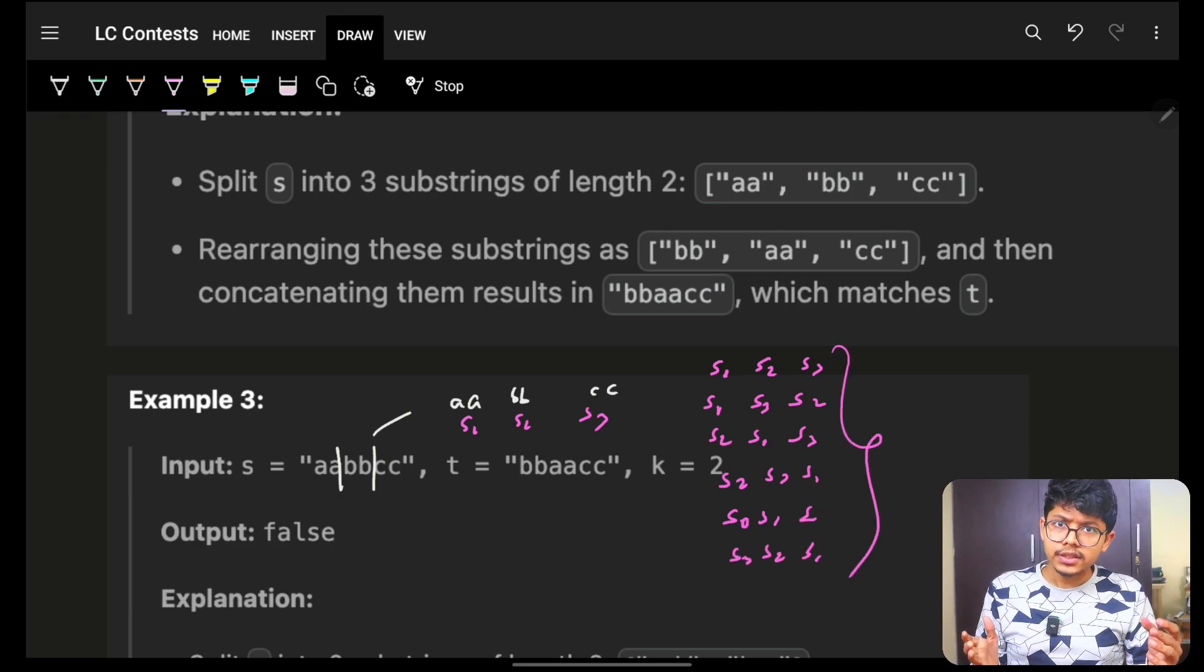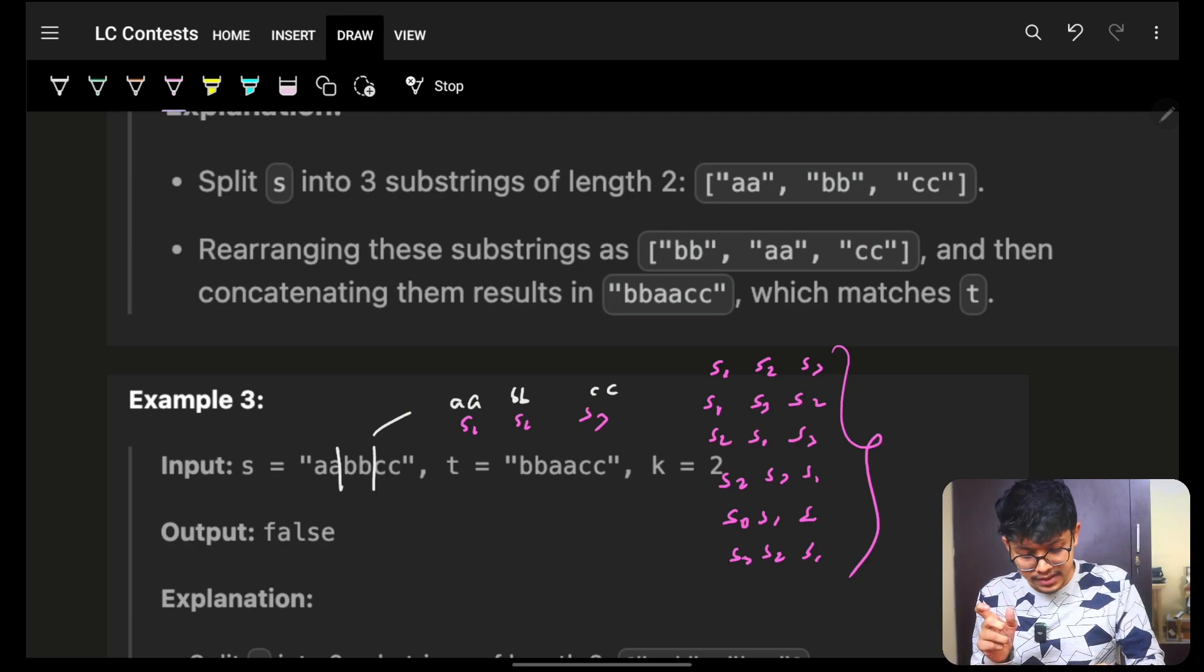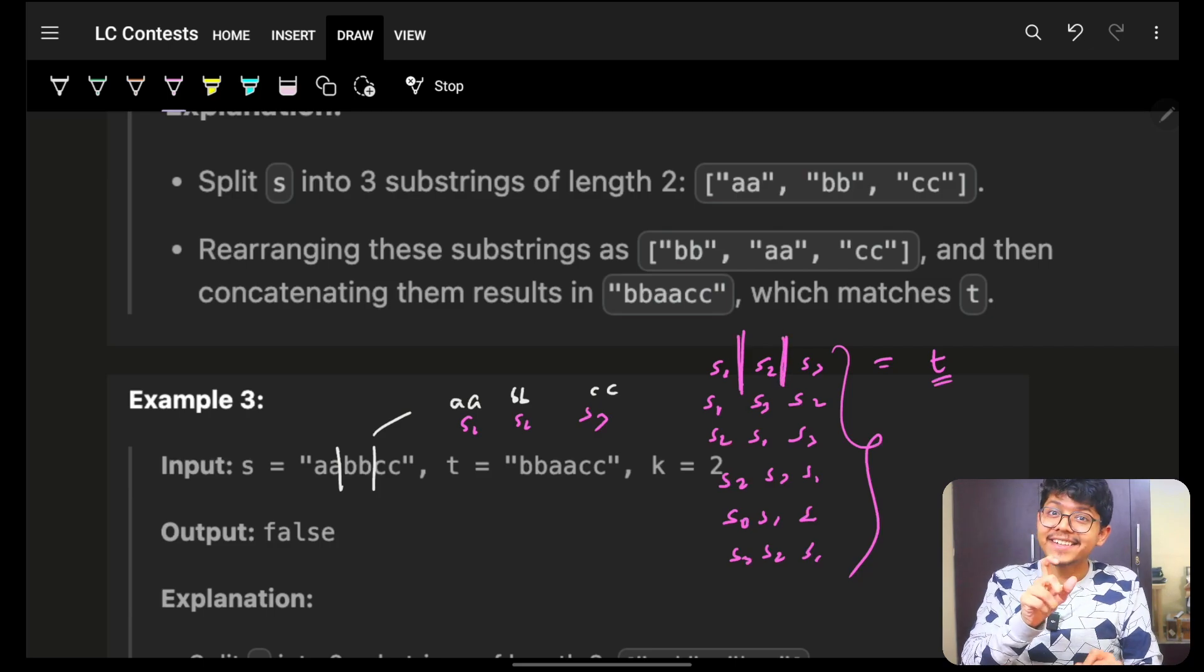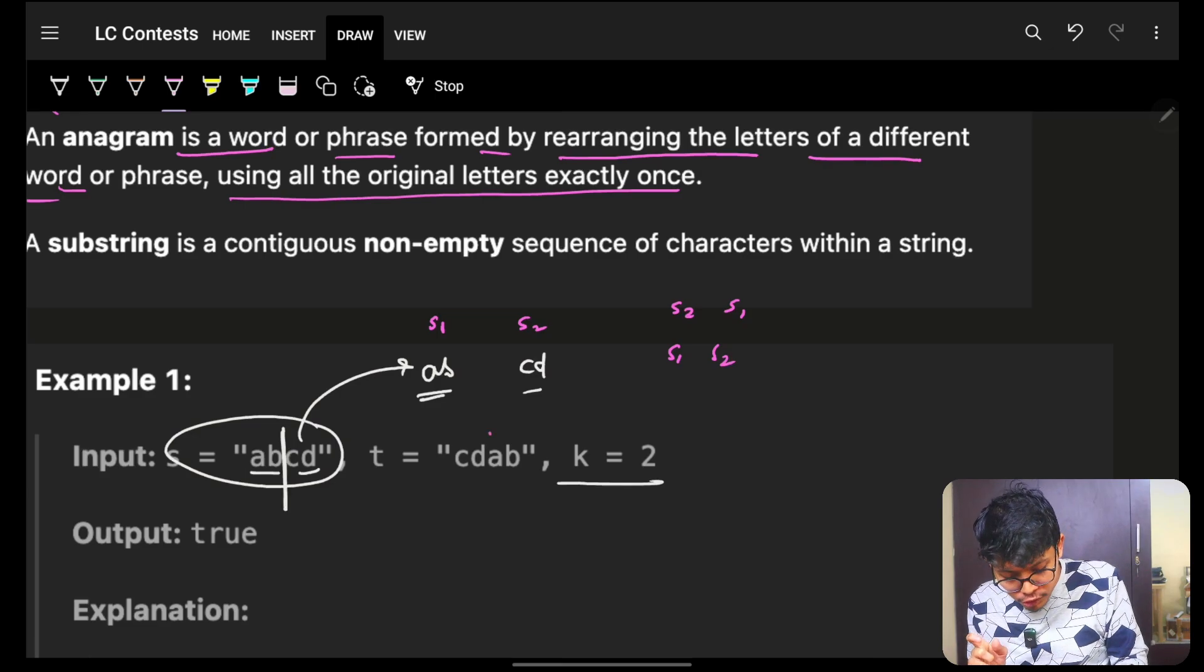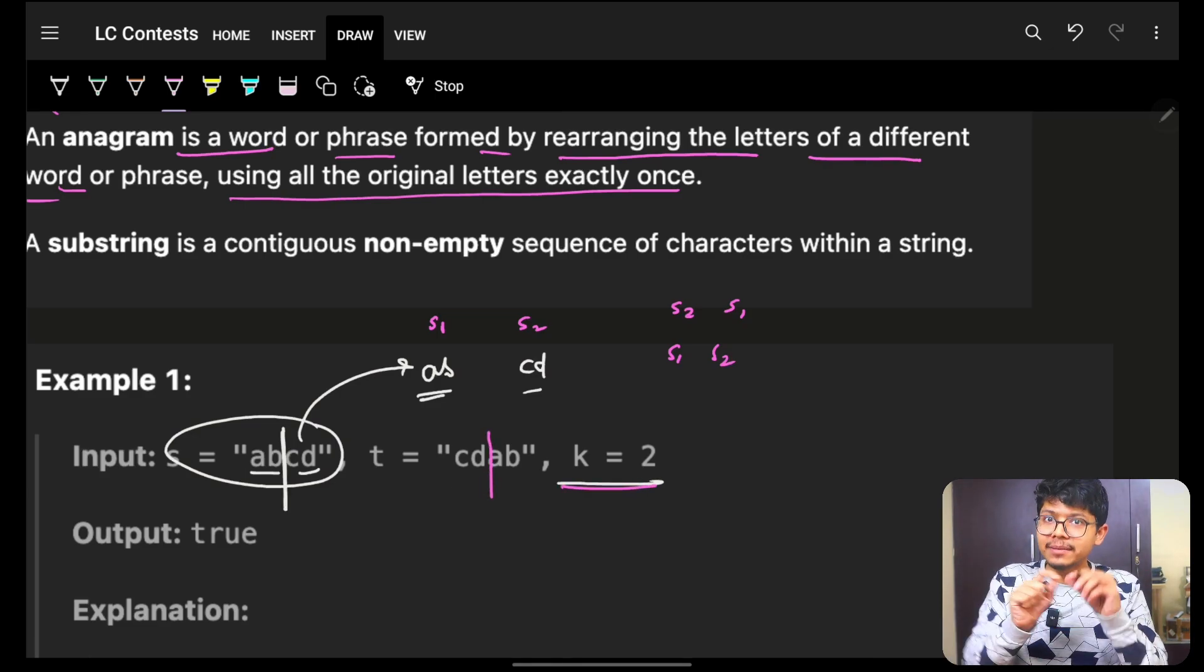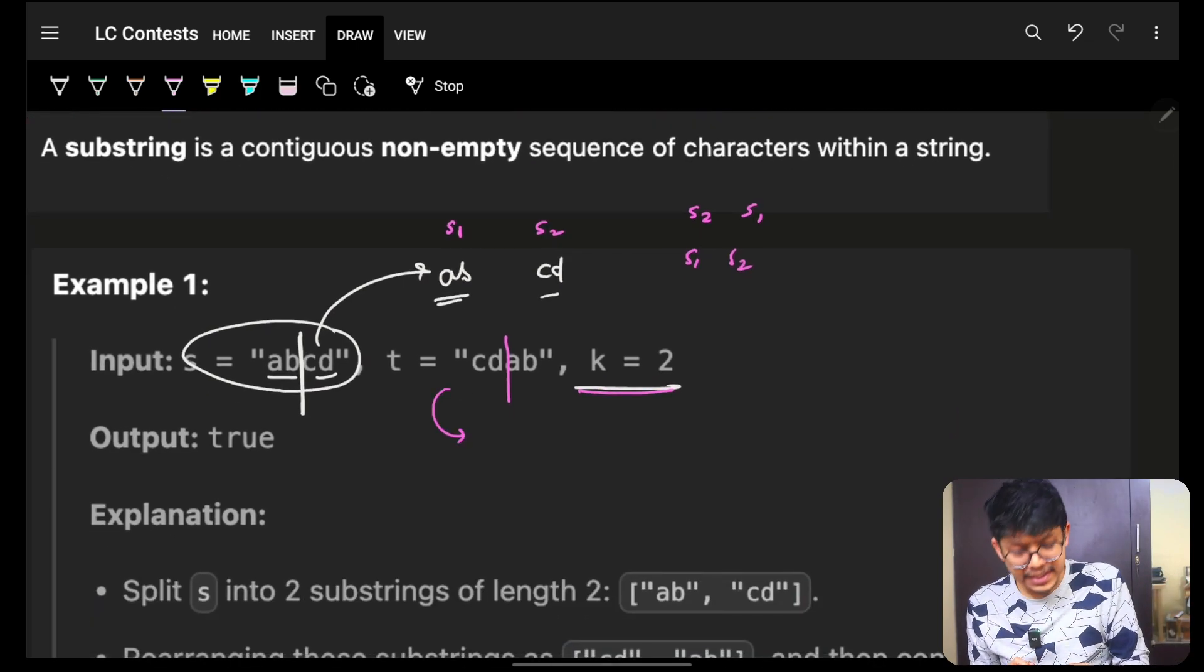Now, there can be many permutations for it. But the fact here is that this target, ultimately, this is the target, which is string T. This is also divided in the same fashion. So what I can do is I can also divide my string T in the K splits because ultimately, I know this is how it will look like finally. So I divided my T also in K splits.